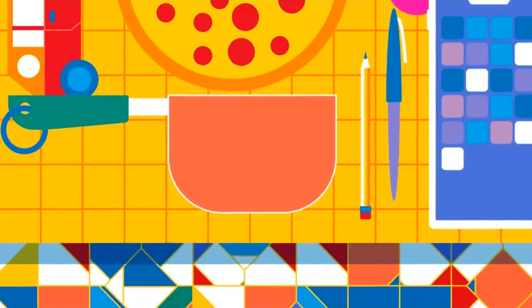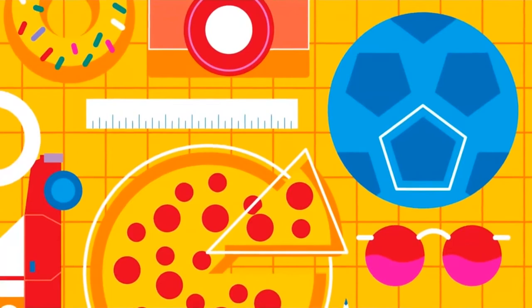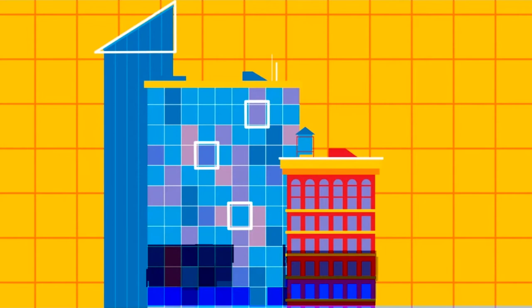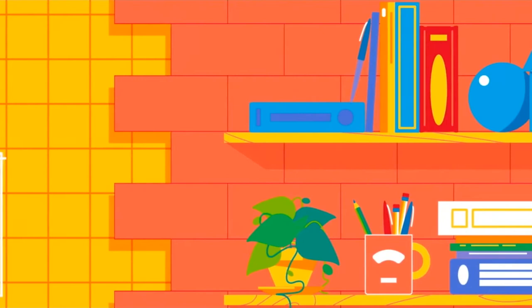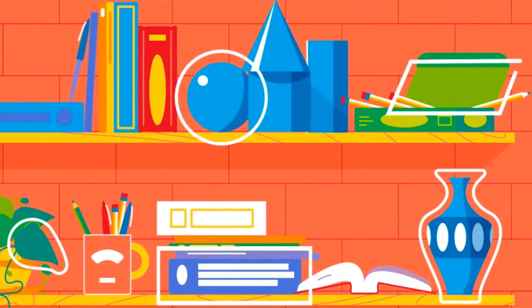You can see shapes everywhere in the world. A pizza is a circle and it gets cut into triangles. You may notice a pentagon is on your soccer ball. You can see squares and rectangles on tiles, windows, and the shape of buildings. Look around you. What shapes do you see? Can you see geometric shapes? Can you see organic shapes? What are the most unique shapes you can see?